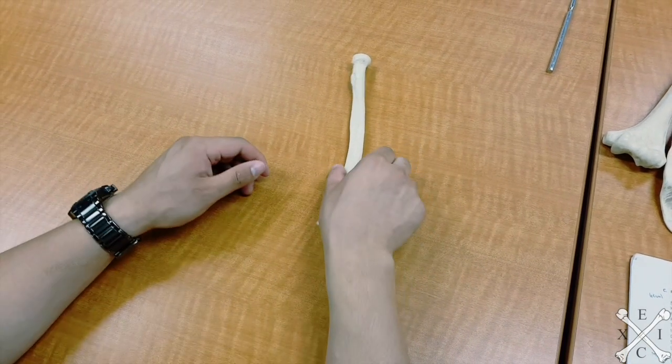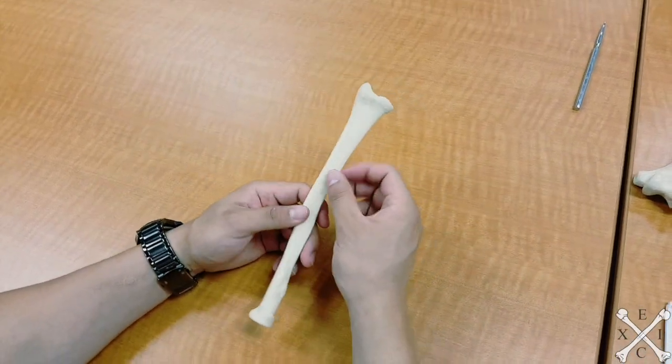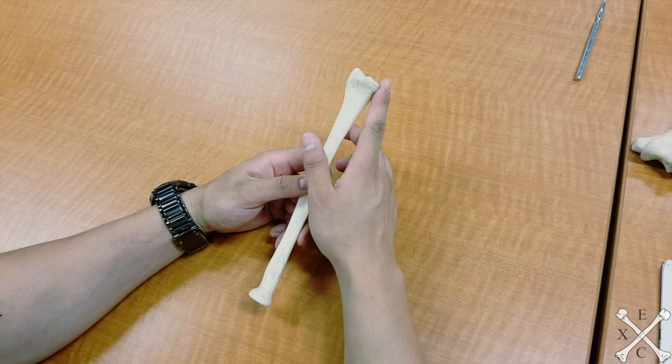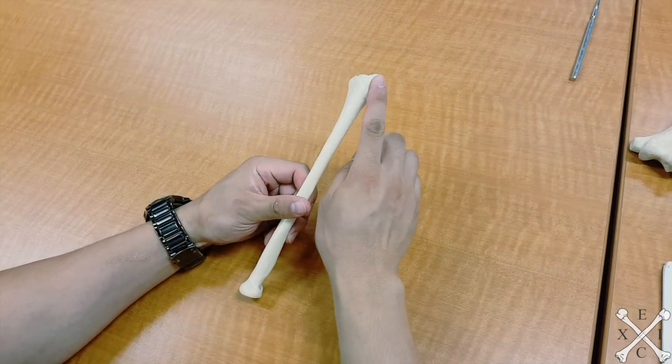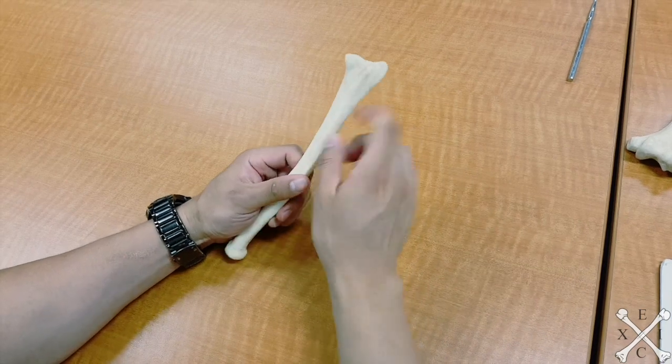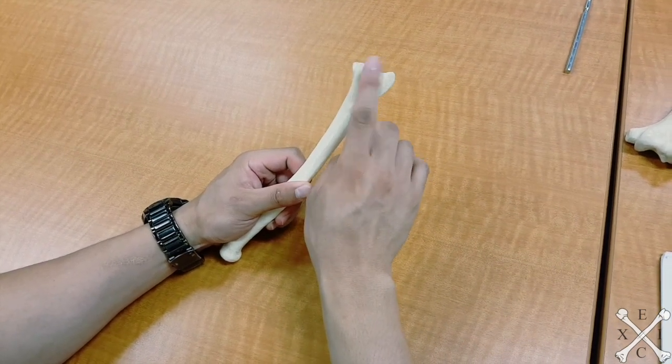This is the radius. In order to figure out the orientation of the bone, we have the ulnar notch that is facing medial, and the styloid process is facing lateral, and the dorsal or Lister tubercle is on the back.